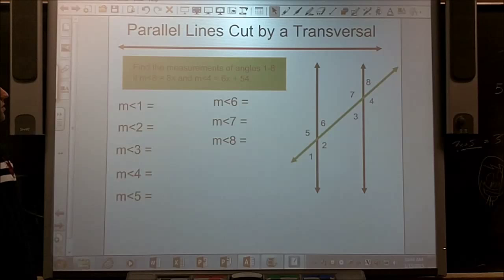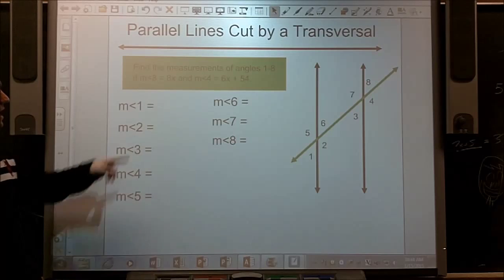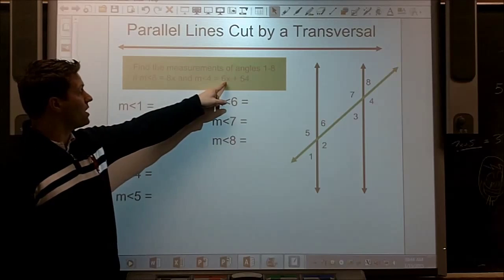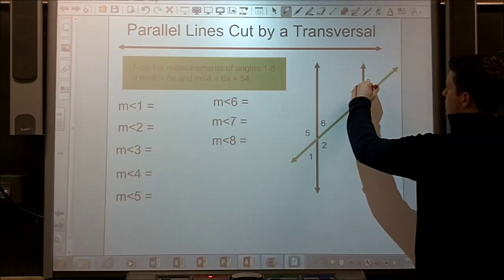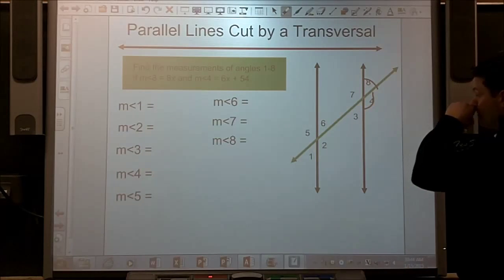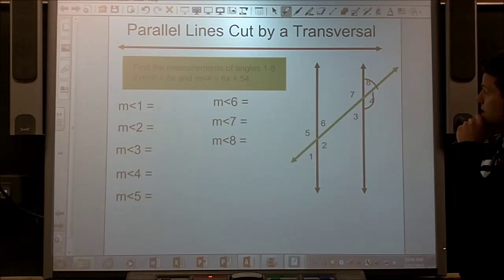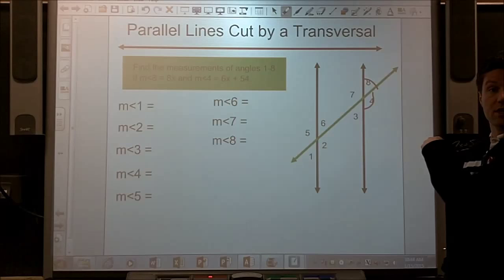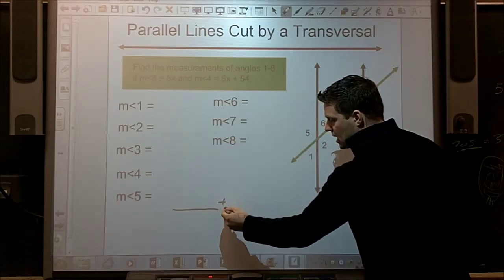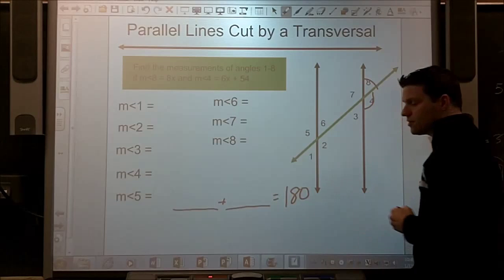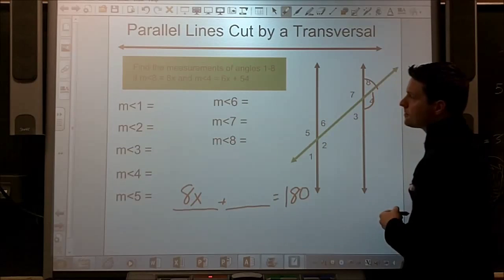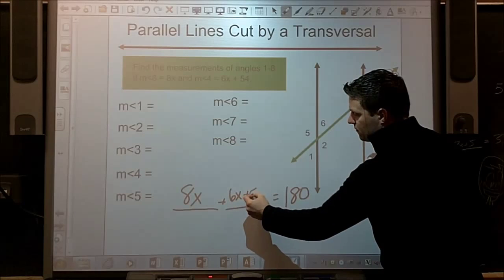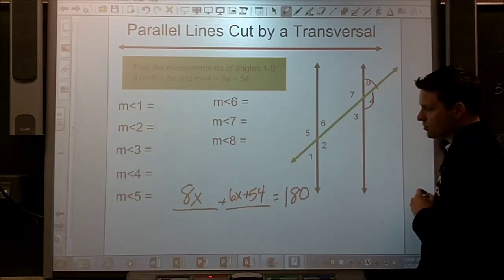Parallel lines cut by a transversal. Find the measurements of angles 1 through 8, if measure 8 is 8x, and the measure of angle 4 is 6x plus 54. So, let's go to where are 8 and 4, so that placement means they make that half circle. It means they're supplementary. So, our equation changes because of the types of angles that they are. They're equal to 180, and let's fill this stuff in. 8x is for angle 8, 6x plus 54 for angle 4, and let's do that solving.